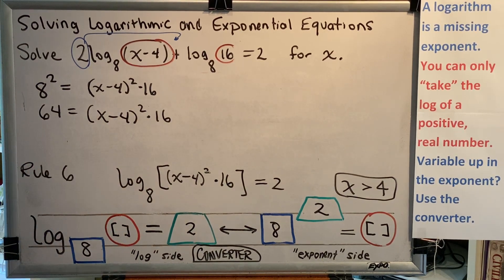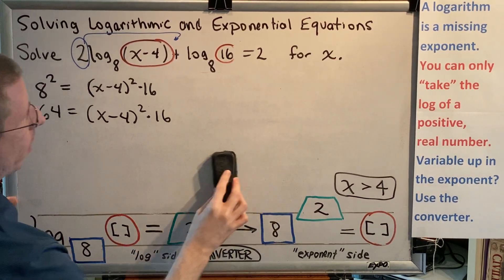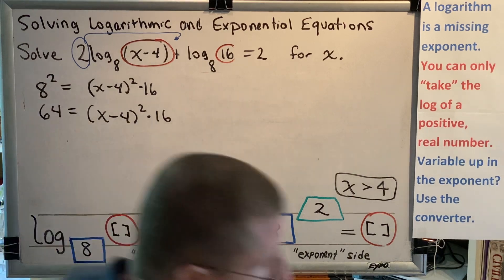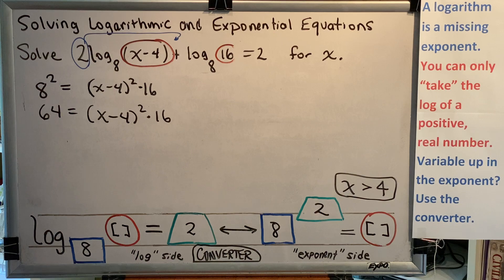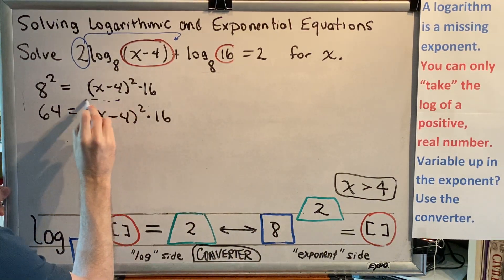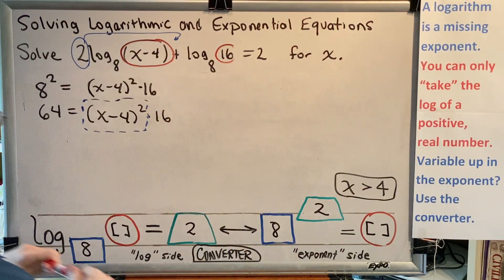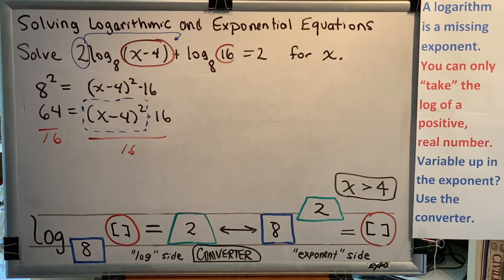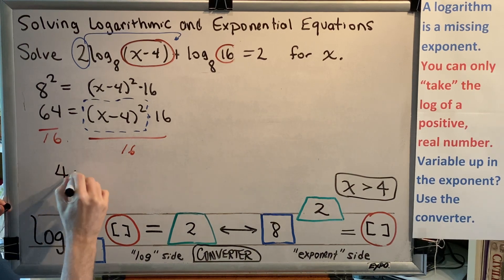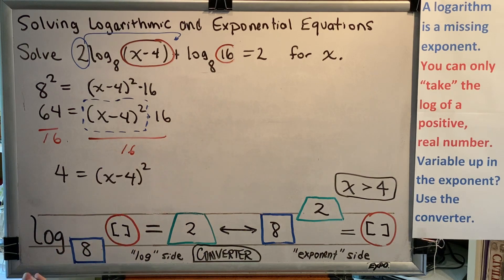And I'm noticing that my variable x is inside parentheses, and those parentheses are being squared. Eventually, I want that square to go away. And so I'm thinking I'm going to use the square root property to solve this problem, which means I need to get the squared part of the problem alone. I need to isolate this part of the problem so that I can use my square root property. So I'll divide both sides by 16. Then on the left, I will have 4. And on the right, I will have (x minus 4) squared.